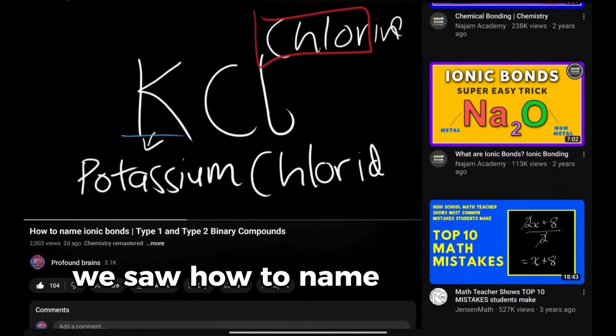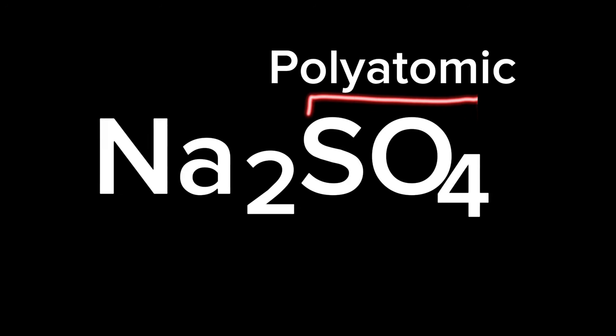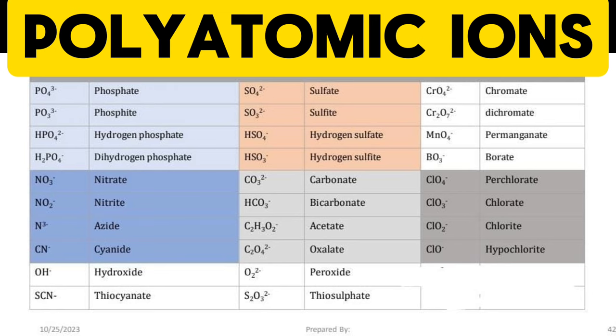The previous video we saw how to name binary ionic compounds, and in this video we are going to show you how to name compounds which contain polyatomic ions. First of all, check this table over here. We will use this table to name our compounds.